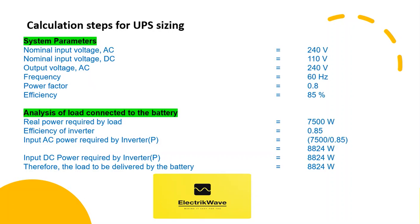System parameters considered: Nominal Input Voltage AC equals 240V, Nominal Input Voltage DC equals 110V, Output Voltage AC equals 240V, Frequency equals 60Hz, Power Factor equals 0.8, Efficiency equals 85%. For analysis of load connected to the battery: real power required by load equals 7500W, efficiency of inverter equals 0.85, input AC power required by inverter equals 8824W, input DC power required by inverter equals 8824W. Therefore, the load to be delivered by the battery equals 8824W.